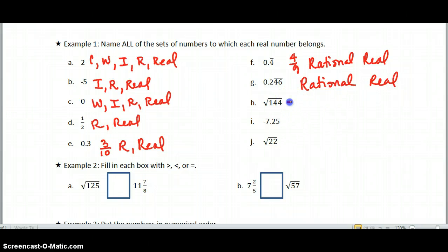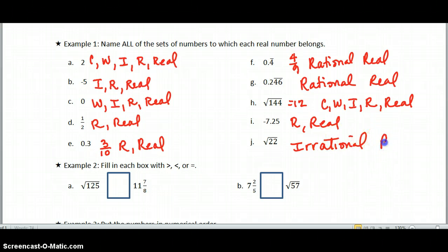The square root of 144 is 12. We learned that yesterday. So 12 is a counting number, a whole number, an integer, a rational number, and it's real. Negative seven point two five. Now if it was just negative seven, we'd say it's an integer, but because it's a decimal, or a rational number, a fractional number, we have to only say it's rational and real. And the square root of 22 would be an example of one of those that I cannot write as a fraction, but it's still a real number, so it is irrational, but it is still real. Irrational, why? Because I cannot write the square root of 22 as a ratio or a fraction.